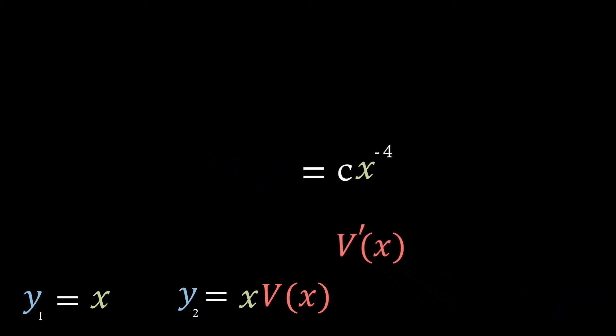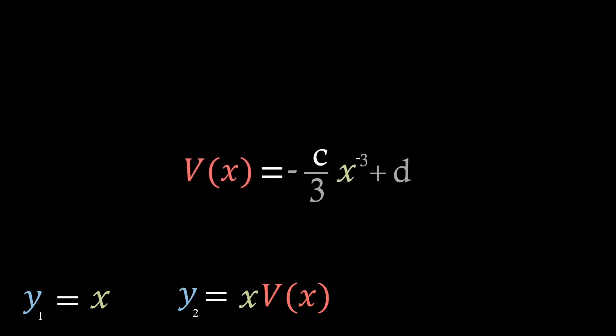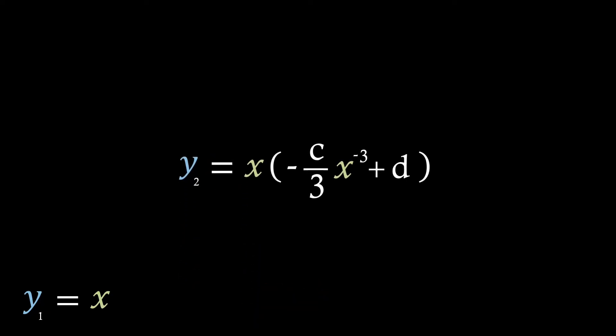But as we're trying to solve for v, we need to substitute this back in. Then we can integrate both sides to find the expression for v of x, where v of x equals minus a constant over 3 times x to the minus 3 plus another constant d. Now as we're looking for the second solution of y, we substitute our expression back in, knowing that y2 equals x times v of x.